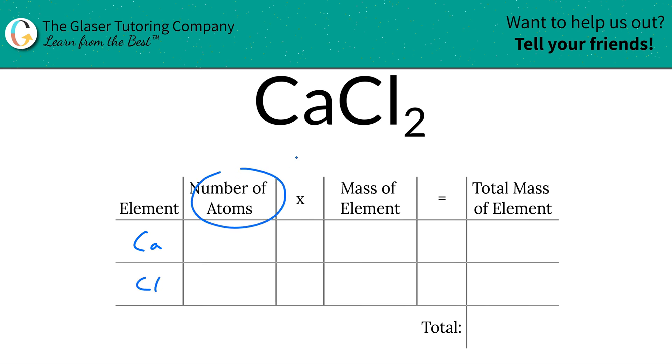Then I'm going to write down the number of atoms. This is where the subscripts come into play. So at the bottom of calcium there is an invisible one, and that means there's one calcium. Chlorine has a subscript of two and that means there are two chlorine.